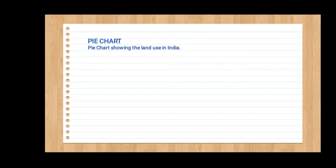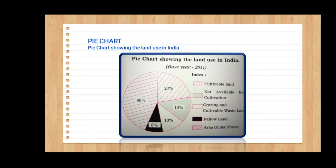The next form is a pie chart. In the pie chart, we check out the things given there — for example, cultivated land, not available for cultivation, grazing, cultivable wasteland, fallow land, area under forest. This we have made from the passage. When making the pie chart, we have to show the index. This is called a pie chart — or we can say it is also called a tree diagram in some contexts.